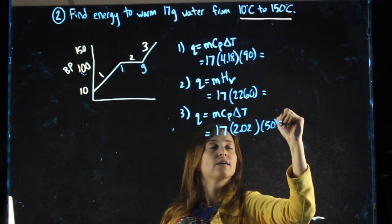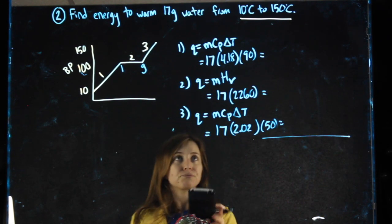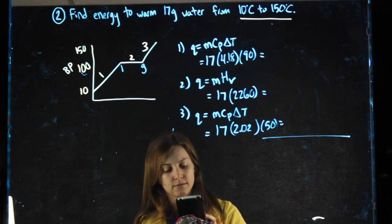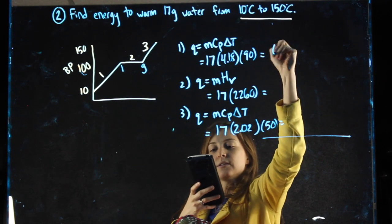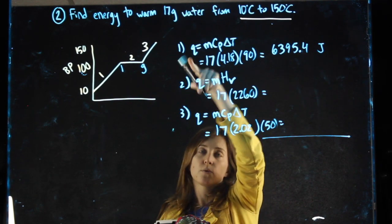I'm going to calculate all of these and then add them together to get my final answer. 17 times 4.18 times 90. These are in joules. Anything starting with Q equals, all the constants I give you, the answers come out in joules.